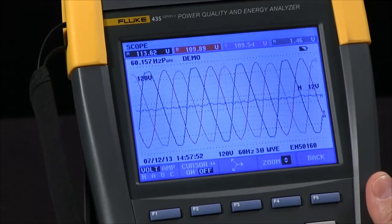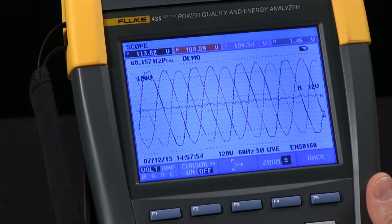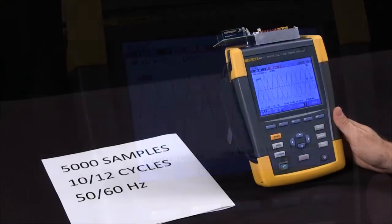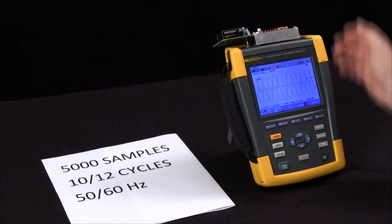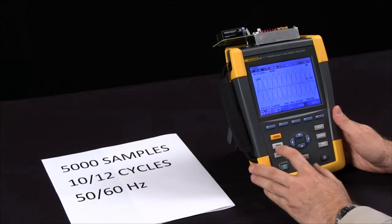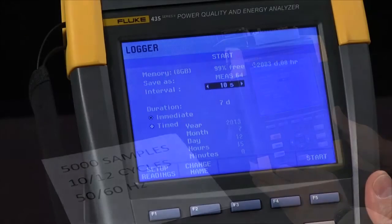Today I would like to discuss the difference between your logging capture interval and sample rate on a 435 series 2 power quality analyzer. We have our display on here from our scope generation board and I'm going to go into my logger menu.